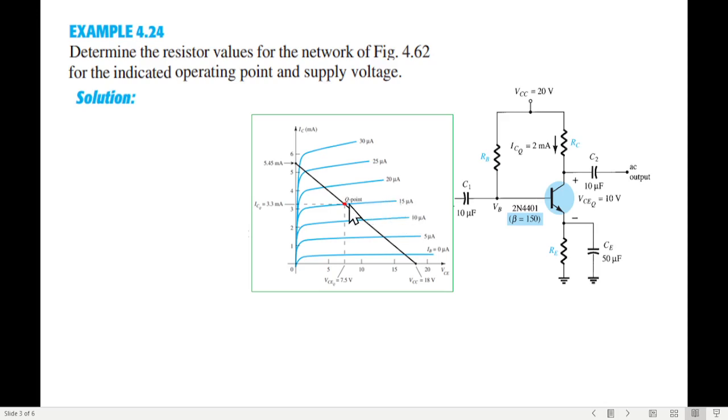The base current, when we establish the Q point, as we extend the Q point, the current is ICQ, which means ICQ is 2 mA and VCEQ is 10V.